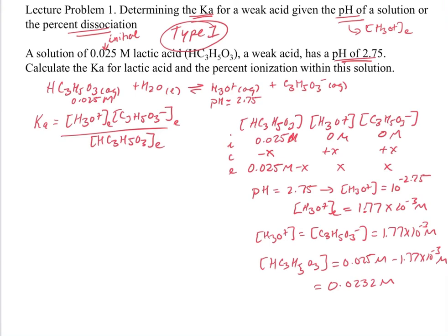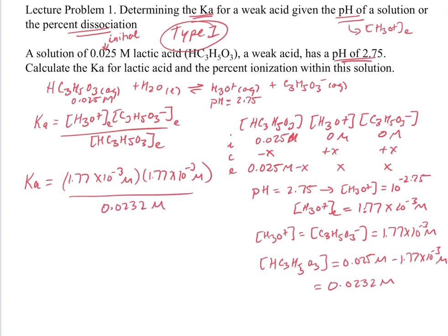Now we have all three equilibrium concentrations needed to solve for Ka. Our Ka equals (1.77 × 10⁻³) × (1.77 × 10⁻³) divided by 0.0232 molar. So our value for Ka equals 1.35 × 10⁻⁴. From our equilibrium concentrations we've gotten the value for Ka, exactly like what we did with the HI goes to H2 plus I2 problem.